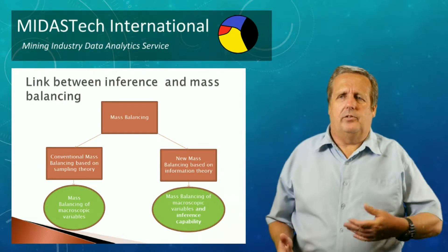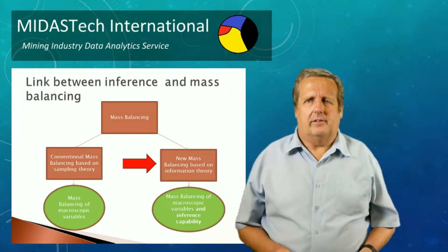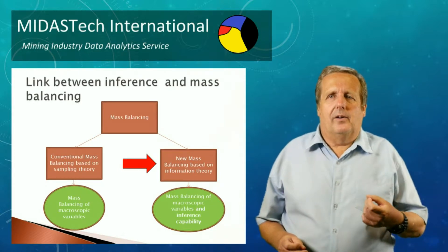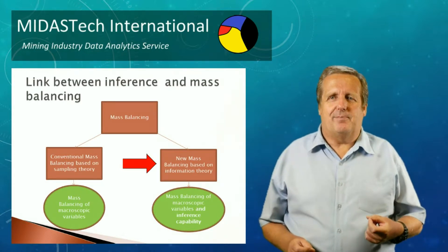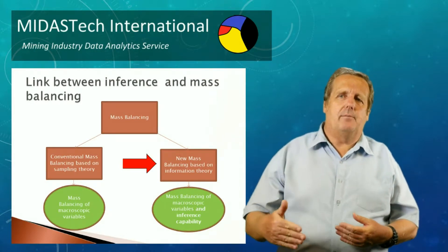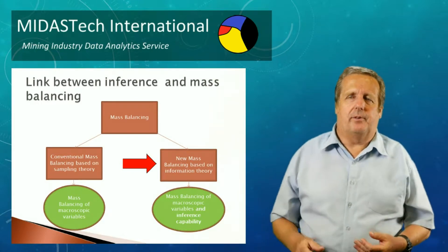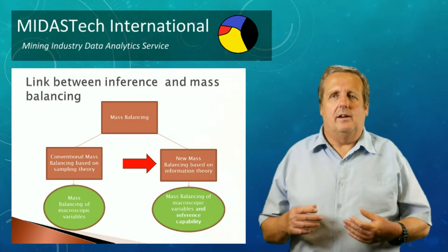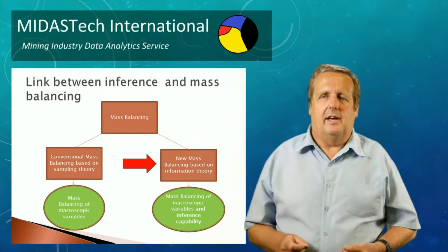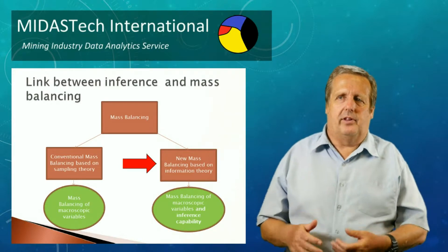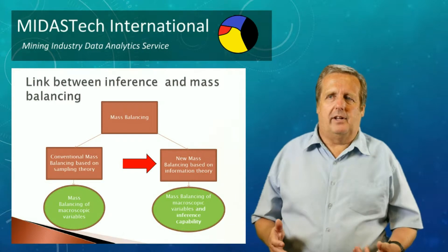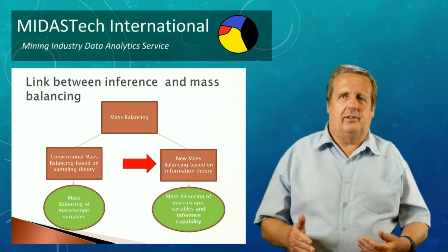The second way is called information theory mass balancing, which isn't as commonly used. In this approach, we can extend mass balancing to use plausible inference to estimate far more missing values than from conventional mass balancing. In particular, we can infer the detailed ore properties — i.e. the distribution of multi-mineral particles — and how these particles are processed at each unit. Indeed, we are trying to use simple plant data measurements to infer detailed plant information.